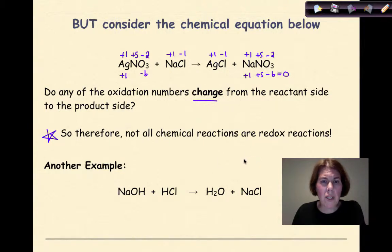Let's look at one more example. Sodium hydroxide plus hydrochloric acid yields water and sodium chloride. Again, I'm going to start out by assigning oxidation numbers. Sodium is plus one. Oxygen is minus two. Hydrogen is plus one, electrically neutral. Hydrogen is plus one. Chlorine is minus one, electrically neutral.